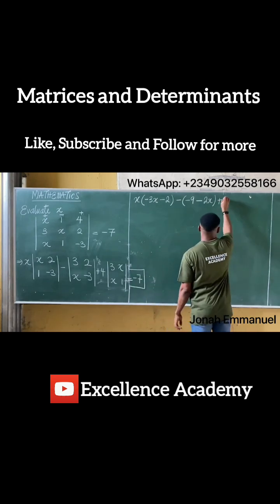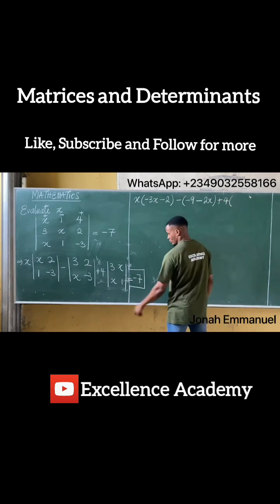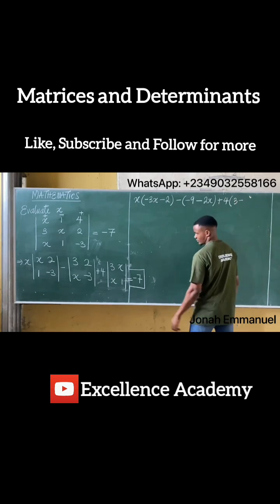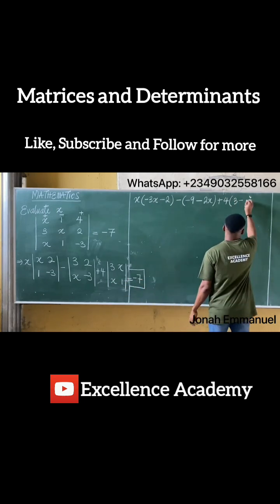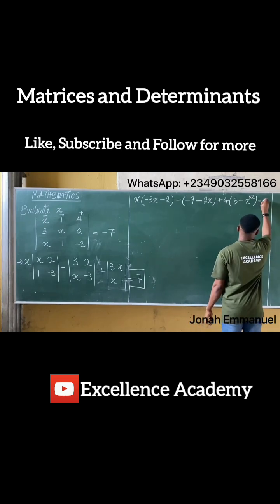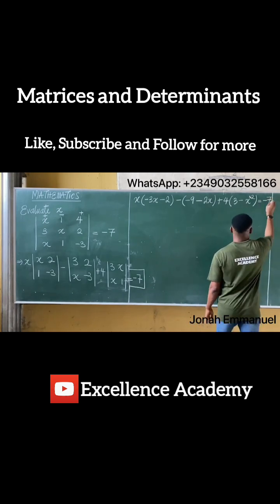...4, so plus 4 into 3 times 1, that's 3, minus x times x, that's x squared, is equal to minus 7. So equal to minus 7.